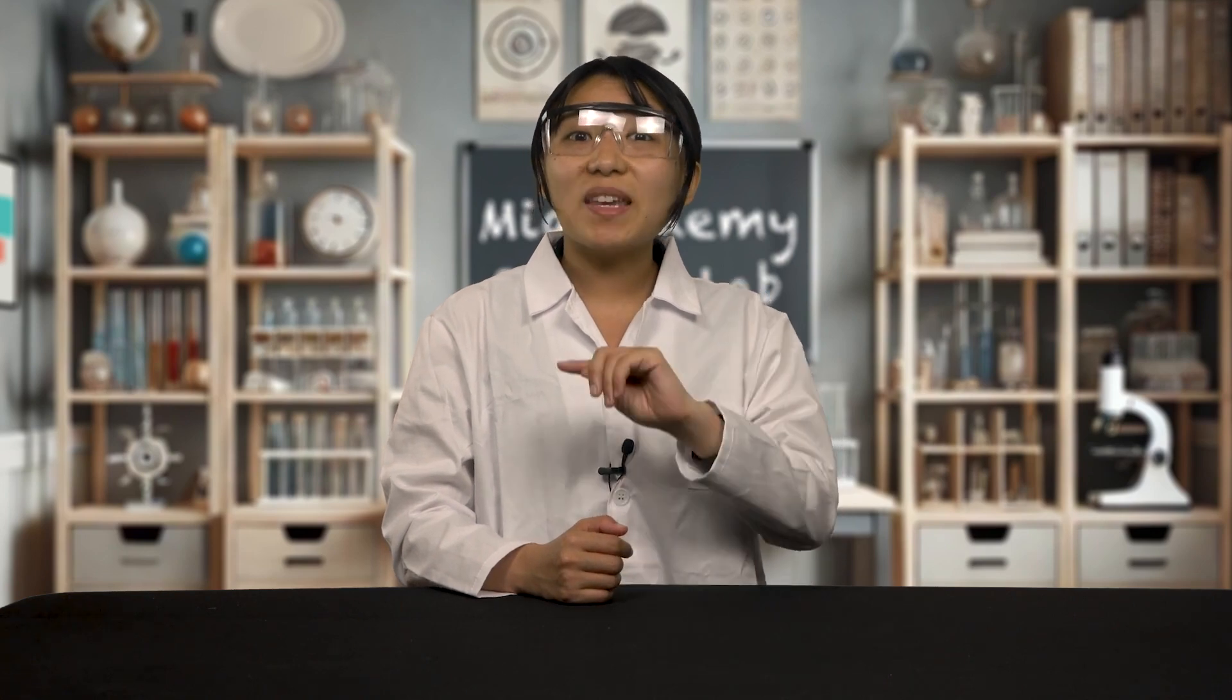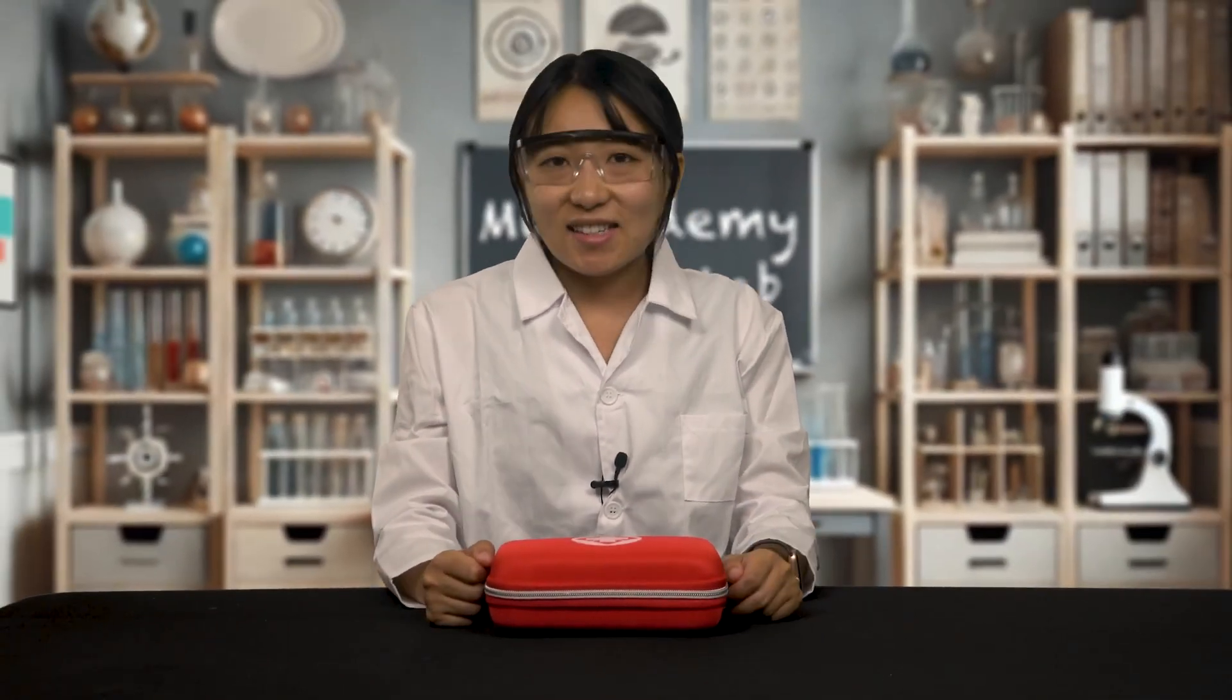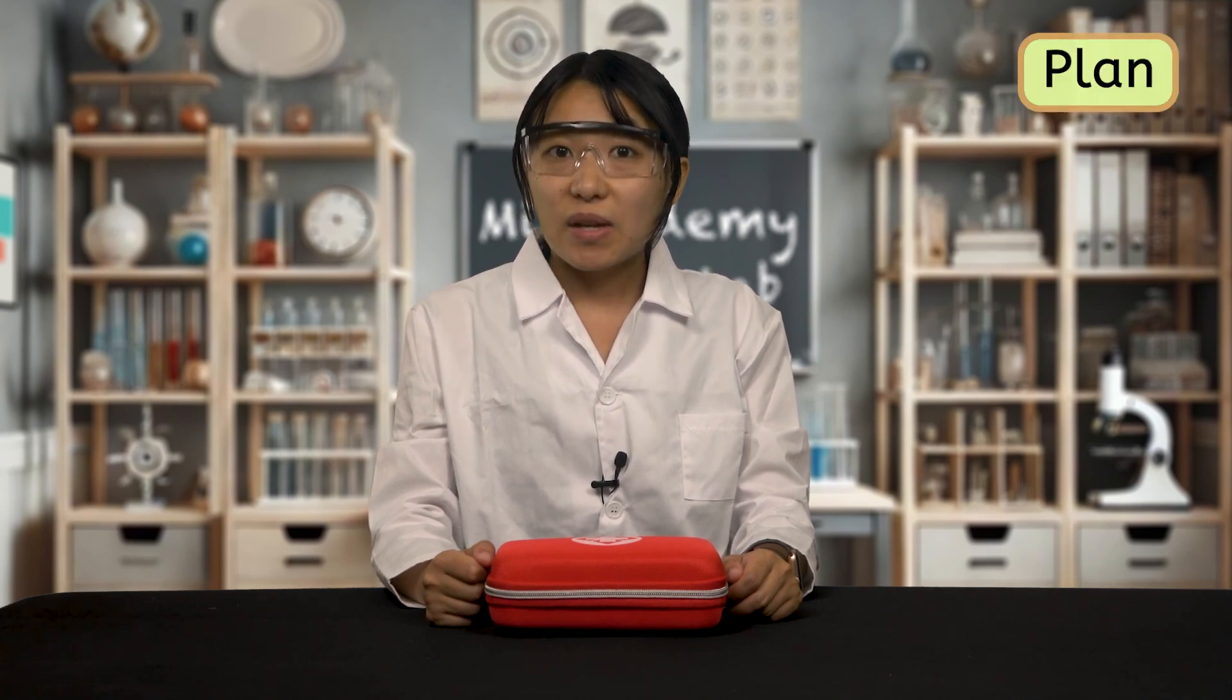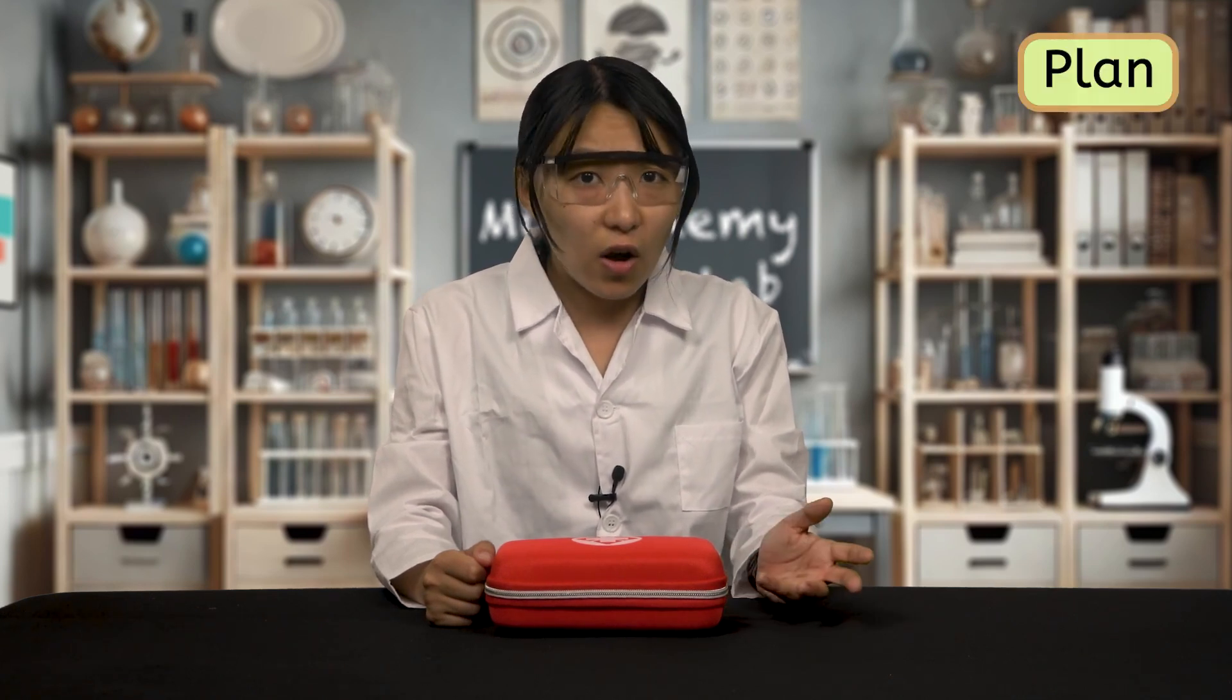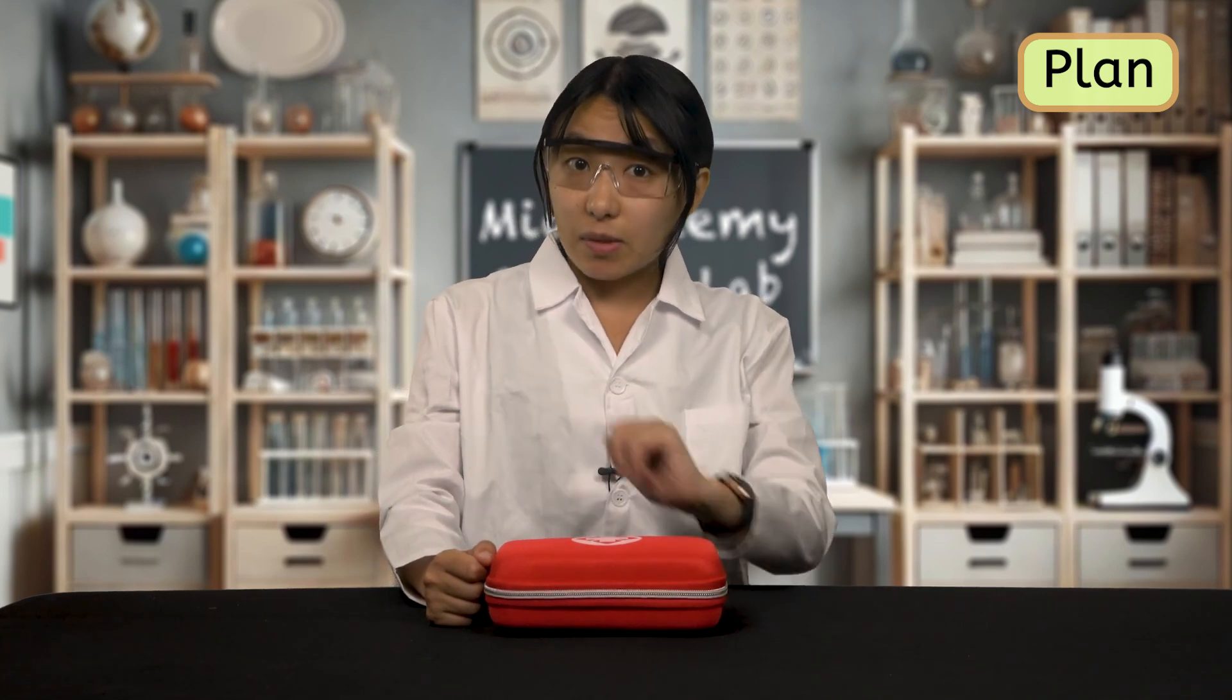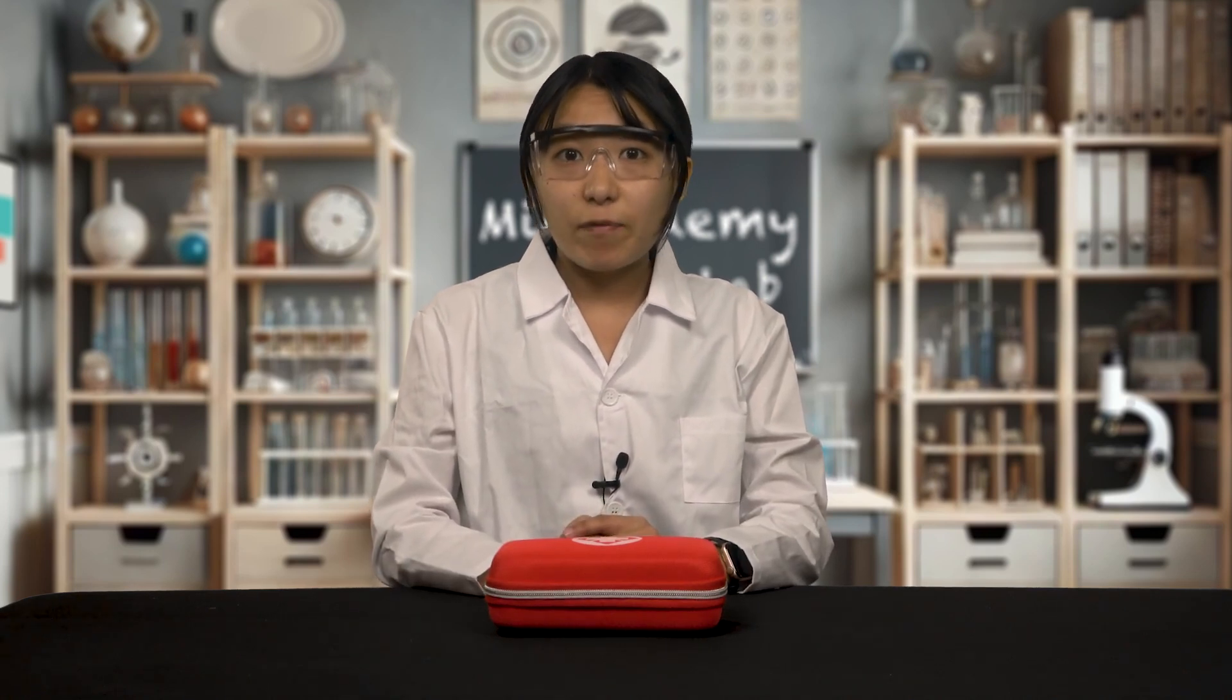This is where the final P comes in, your emergency plan. Even when you prepare, protect, and prevent, accidents can still happen. So having a plan for emergencies is crucial. It's like knowing what to do if you fall during a soccer match. You've got to be ready to respond. First, never complete a lab without a parent or guardian at home. You want to make sure you have backup in case of an emergency during the lab.